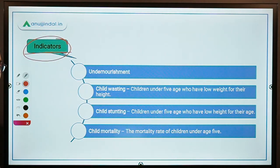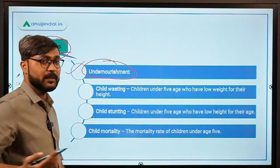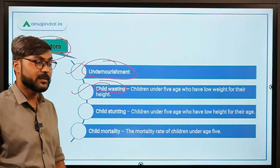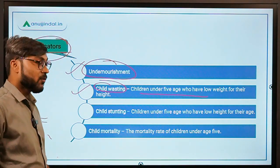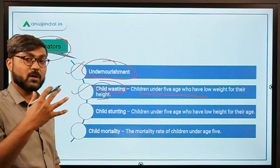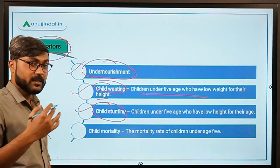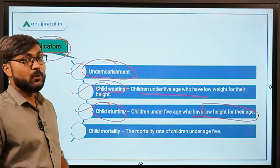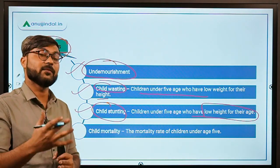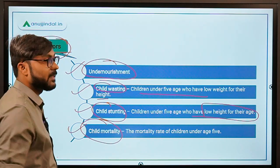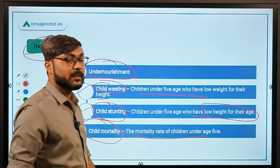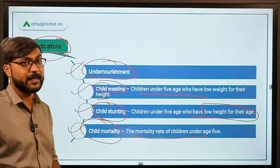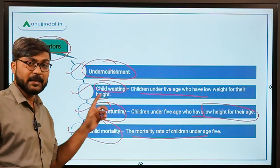There are four indicators in the Global Hunger Index. Number one is under-nourishment. Number two is child wasting — children under 5 who have low weight for their height. Number three is child stunting — children under 5 who have low height relative to their age. Number four is child mortality — the mortality rate of children under the age of 5 years. Remember all four of these indicators.